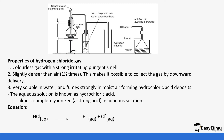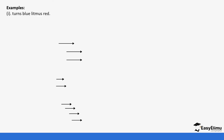When hydrogen chloride gas dissolves in water it forms hydrochloric acid in aqueous solution. This dissociates into hydrogen ions and chloride ions. The solution has acidic properties — it turns blue litmus paper red, while red litmus paper remains red.